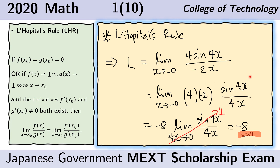This expression equals the new form. We can take the constant outside of the limit sign, giving us negative 8. Inside the limit symbol is sin of 4x over 4x. If we replace the variable — instead of x approaching 0, we have 4x approaching 0 — this limit is well known and is just equal to 1. So L, the original problem, is equal to negative 8.